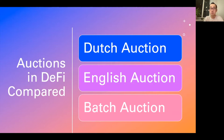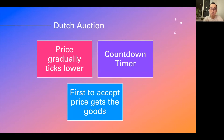Let's look at the different types of auctions: the Dutch auction, the English auction, and the batch auction. The Dutch auction works with a countdown timer where the price on screen gradually gets lower and lower until someone accepts that price. In DeFi, this can be done with a ticker that automatically reduces the price block by block.